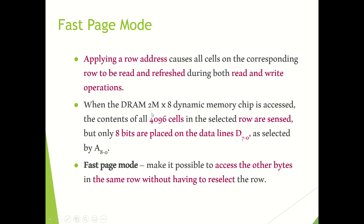In the 2M by 8 type of DRAM, 4096 rows are there. First we specify any row address, which will activate any one of the 4096 rows, and then we specify the column address. Nine bits are used for specifying the column address, which will activate any one of the 8-bit groups. The output will be available on D0 to D7 data lines based on the operation.